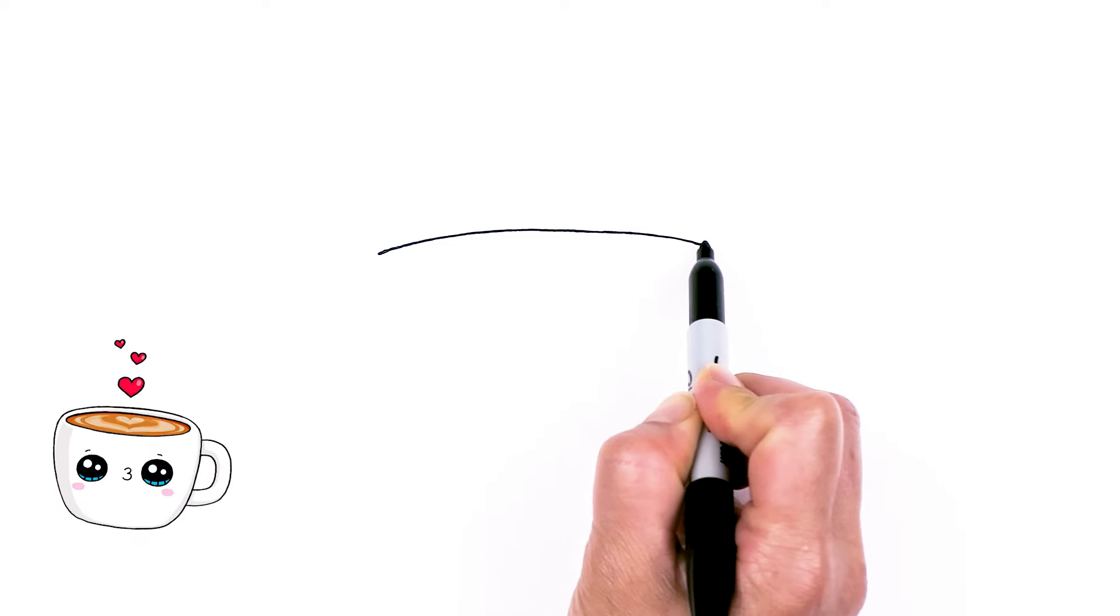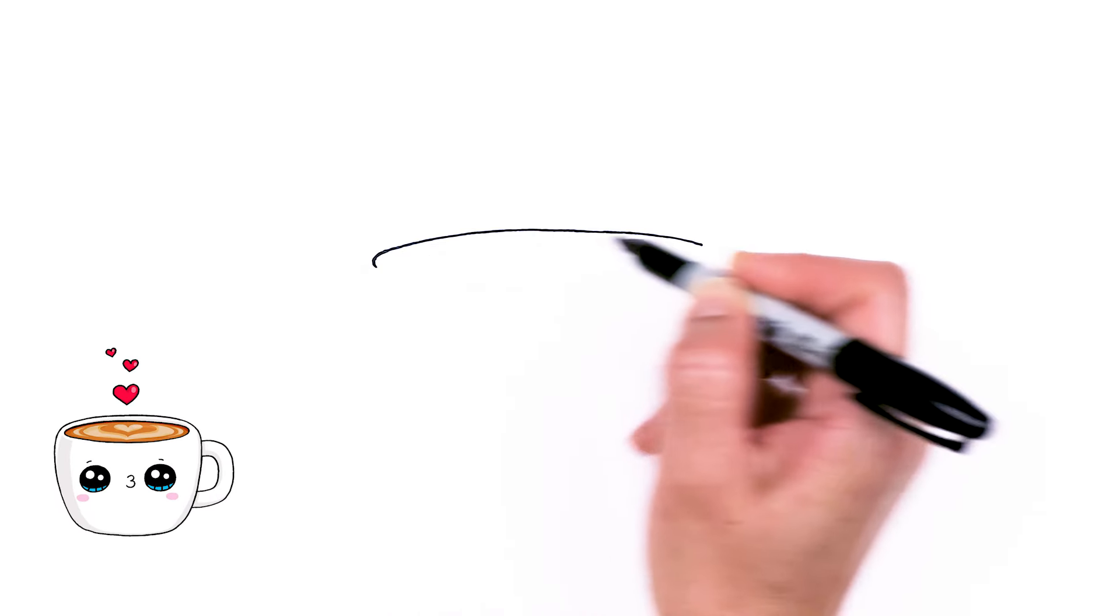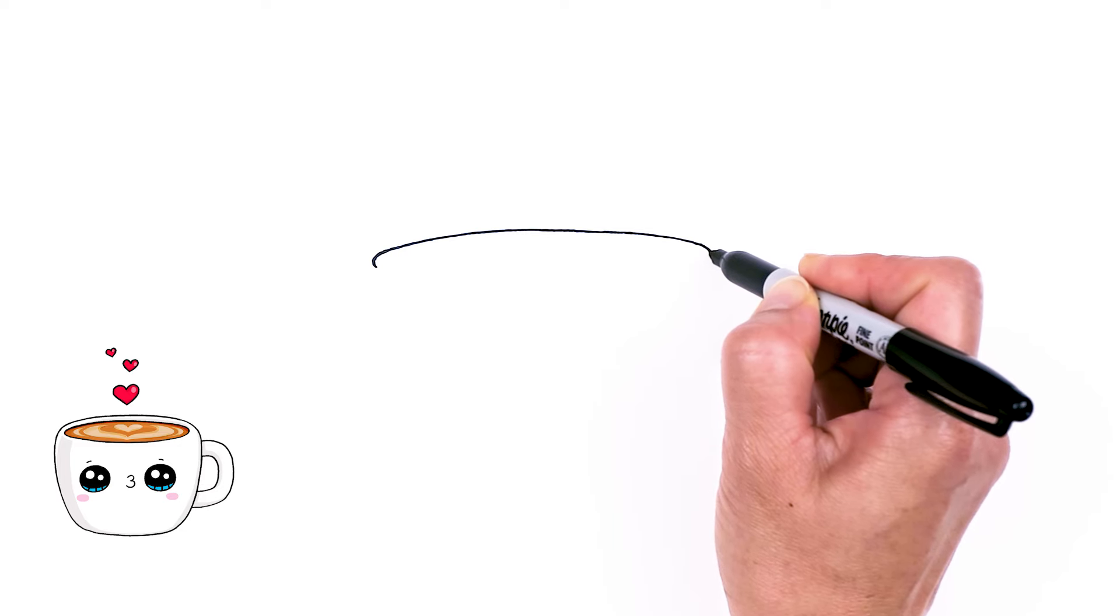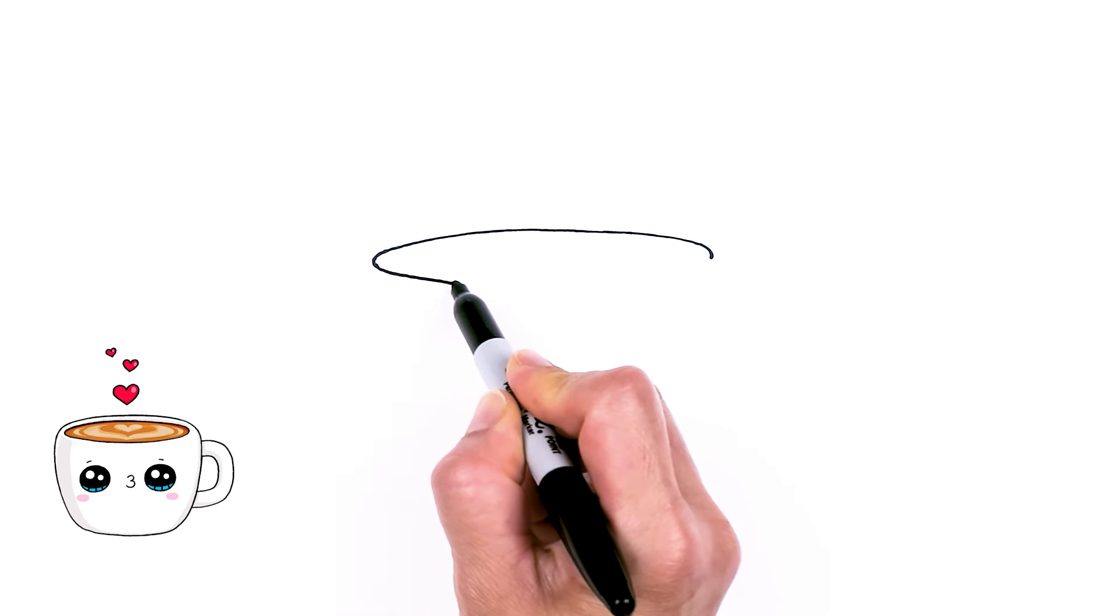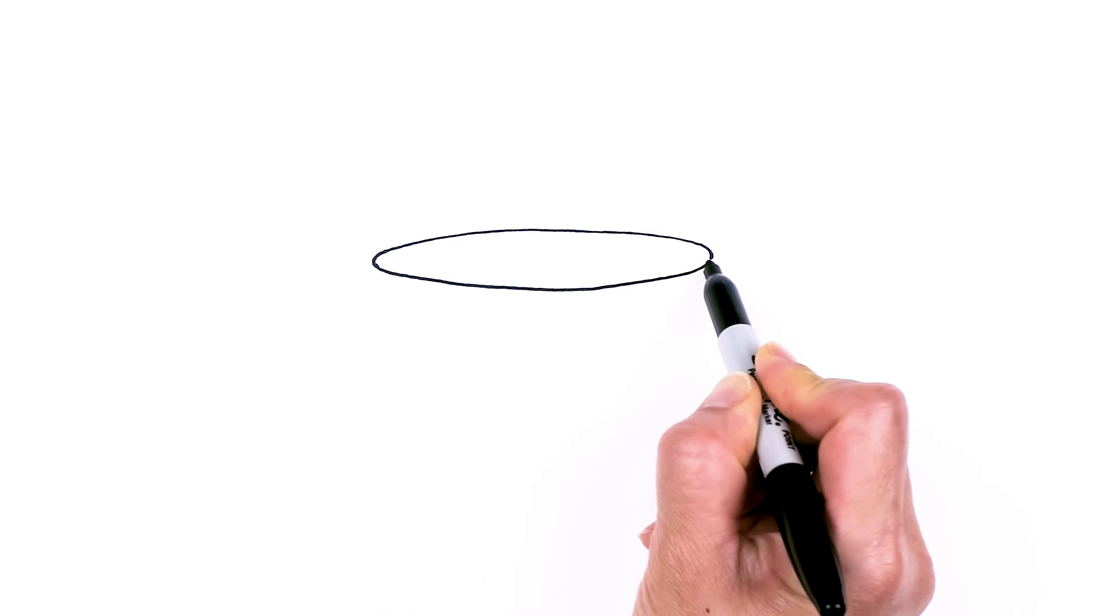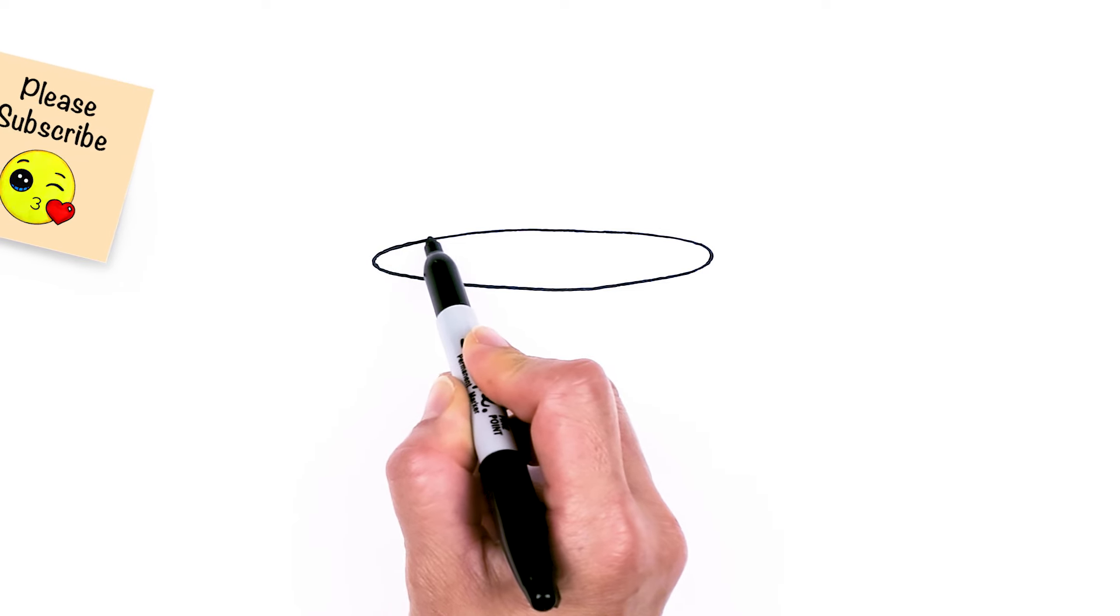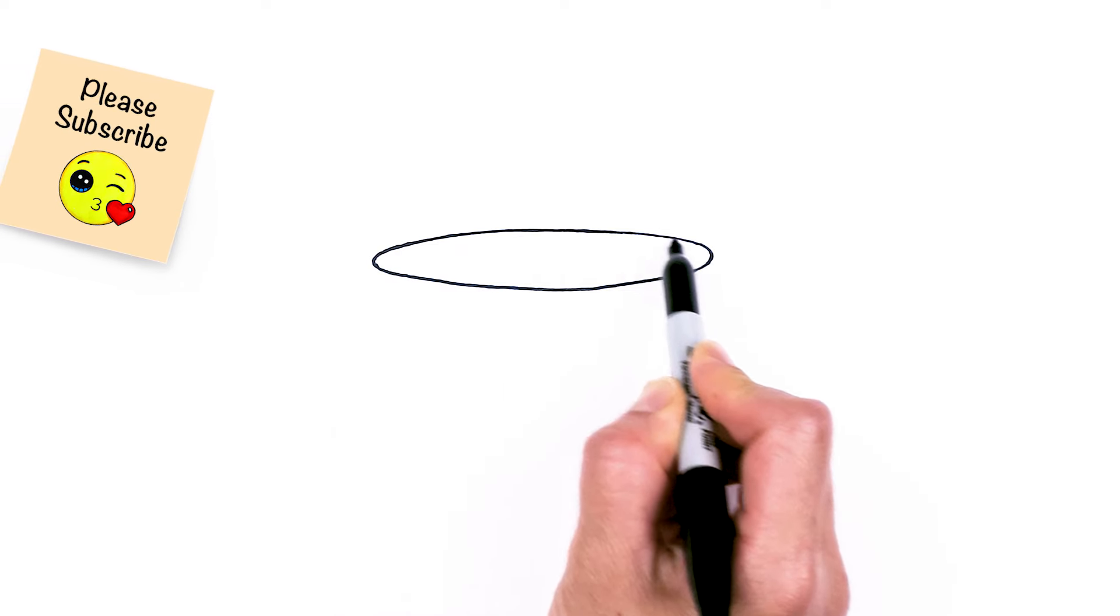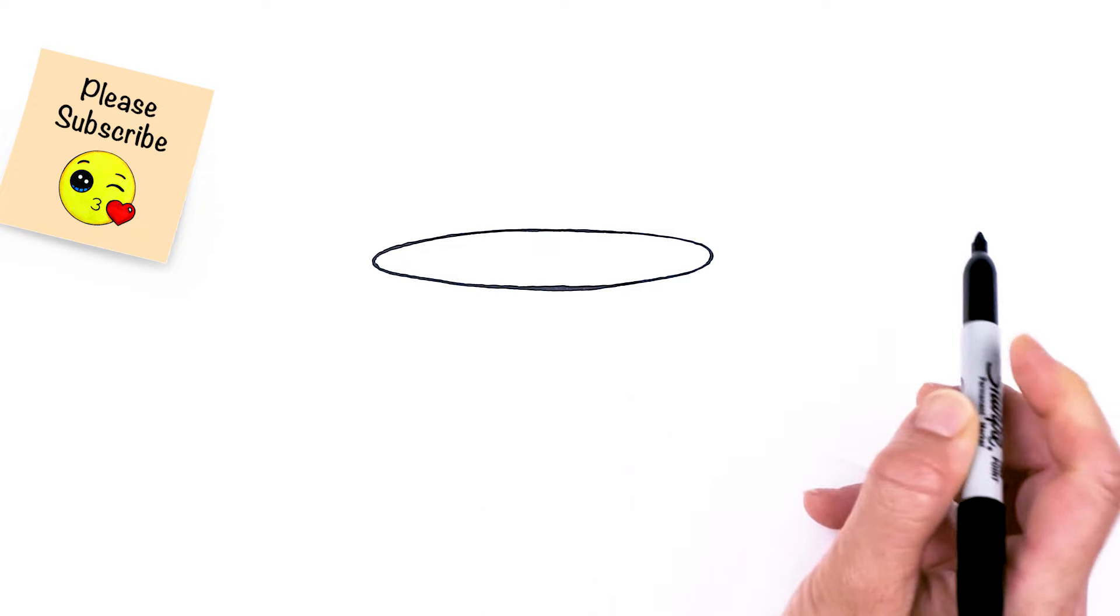I'm just going to go down and about right there I'm going to start to round it off on both sides and then do the same thing on the bottom. We're just drawing a nice wide oval for our cup here.